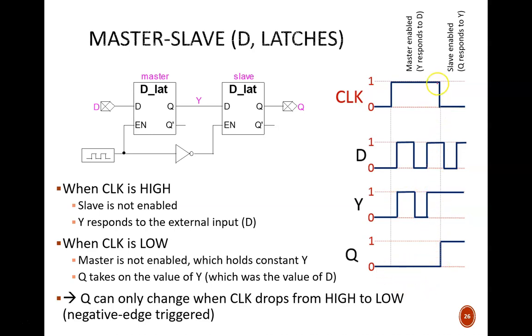But then the clock drops low. This now disables the master latch and enables the slave latch. As a result, the Y value can change no more, and the Q value changes to whatever the current Y value is. These fluctuations in D have no effect because Y cannot change, and Q has no direct connection to D.